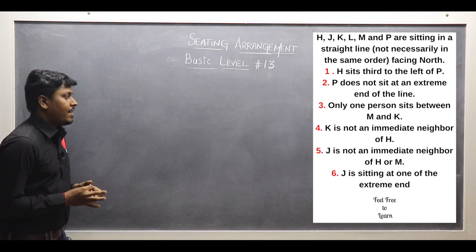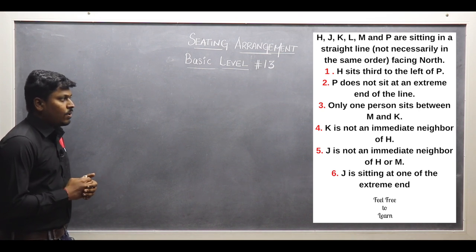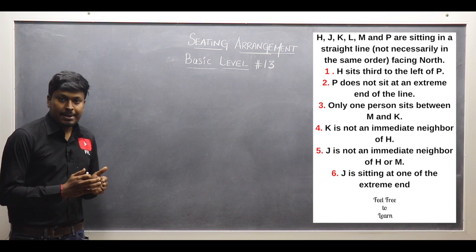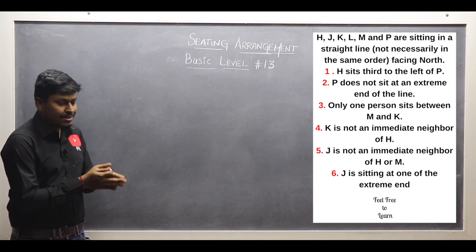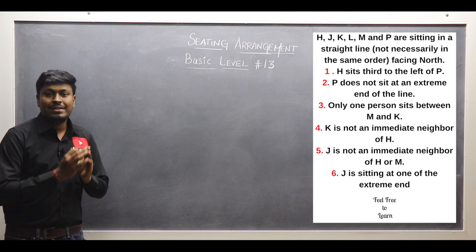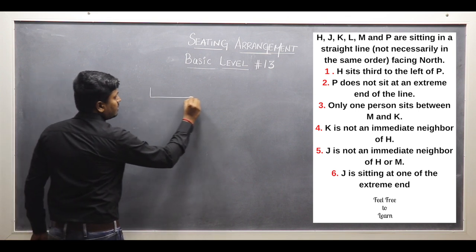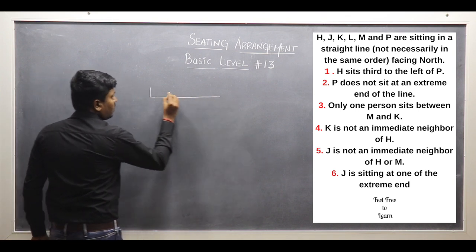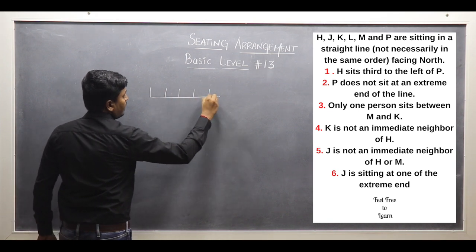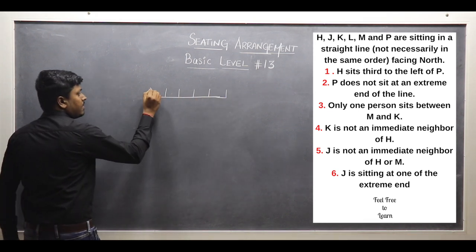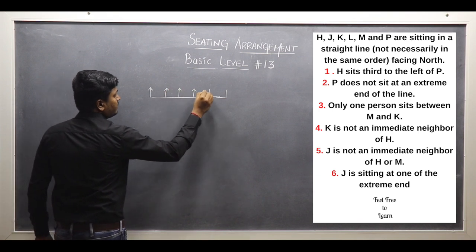So H, J, K, L, M and P are sitting in a straight line, not necessarily in the same order, and all 6 persons — totally 6 — are facing north. So let me draw a diagram: positions 1, 2, 3, 4, 5 and 6. All 6 persons are facing north.